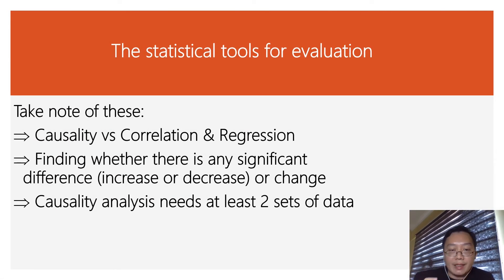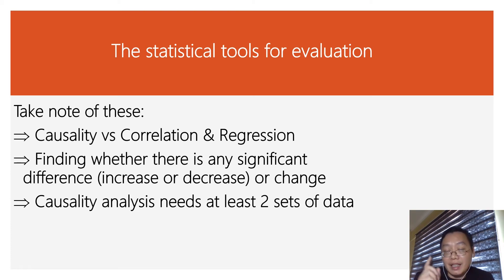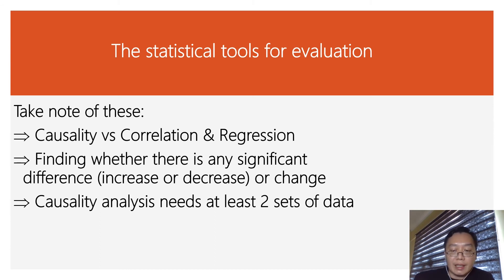One thing I want to emphasize is that when it comes to evaluation, the statistical tools you need to use are actually looking at differences. We are looking at causality, not correlation, not regression. We are not looking at the relationship between two or more variables, and we are not looking at what the independent variable predicts in the dependent variable — that means regression. In evaluation research, you are looking at at least two sets of data collected at two different time intervals, so correlation and regression analysis is not applicable. You need statistical tools that use two sets of data or more, for example T-test, ANOVA and ANCOVA.